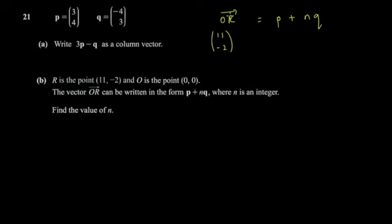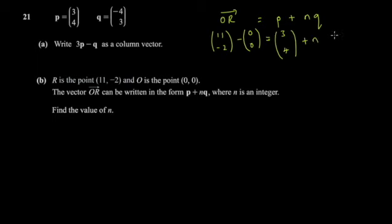R is a position vector. Since the origin is defined as (0, 0), it makes no difference — OR equals the position of R. So you write OR equal to (3, 4) plus n times (-4, 3), and you're told OR equals (11, -2).